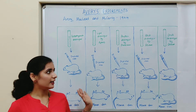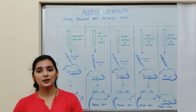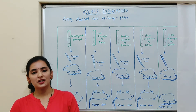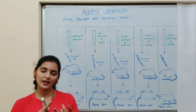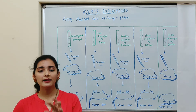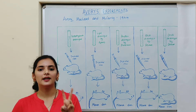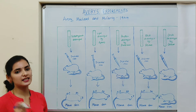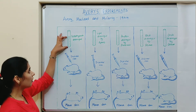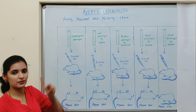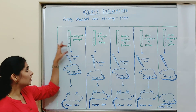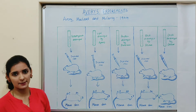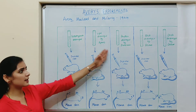To find that out, Avery and his colleagues added two steps prior to the regular Griffith experiment. In the first step, they homogenized or ground up the heat-killed S strain and obtained an extract from it. In the second step, they added different enzymes to that extract — a different enzyme in each separate experiment.